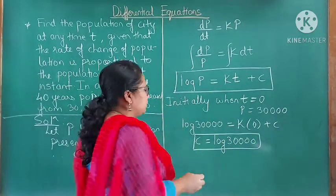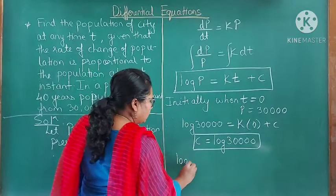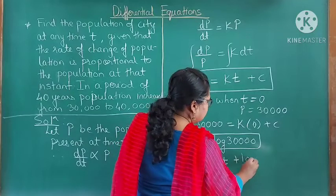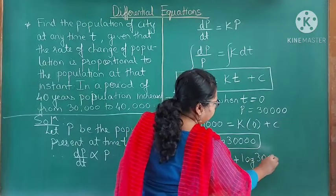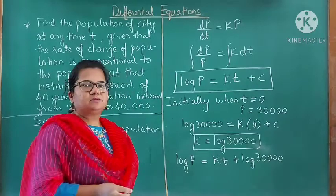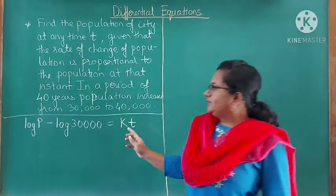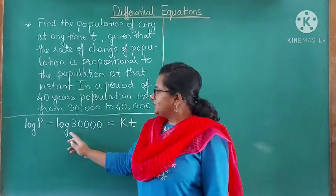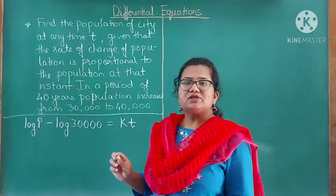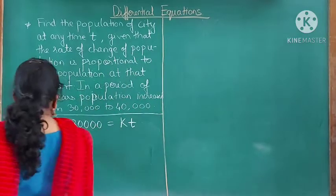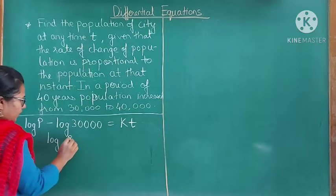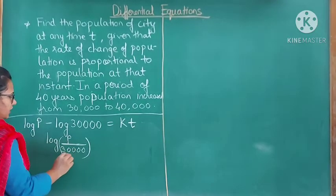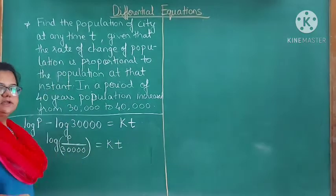We substitute this value of C into the equation. So log P = kt + log(30,000). Taking log(30,000) to the left-hand side, it becomes negative: log P − log(30,000) = kt. Since log a − log b = log(a/b), this becomes log(P/30,000) = kt.